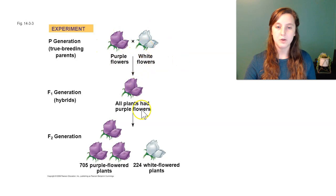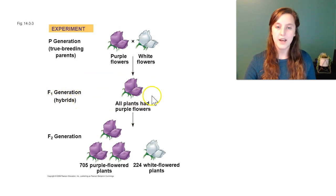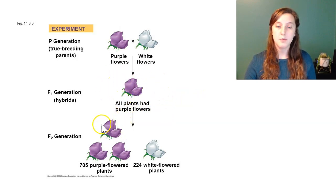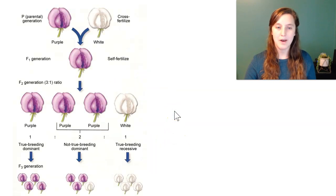When he crossed these two, all the plants in the first generation — called the F1 generation, also called a hybrid — were purple. Once he crossed these purple F1 plants with each other, he got mostly purple but some white-flowered plants. We'll look on the next slide about why this is.